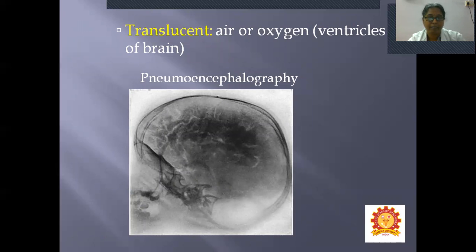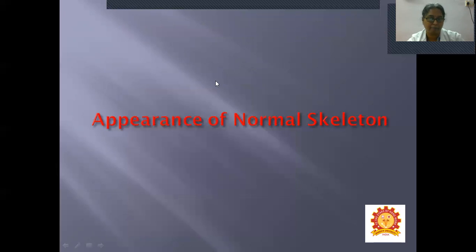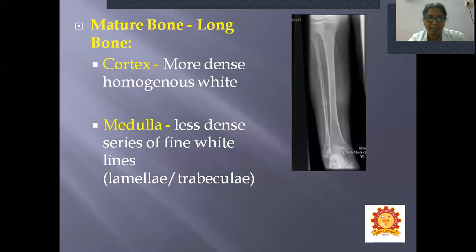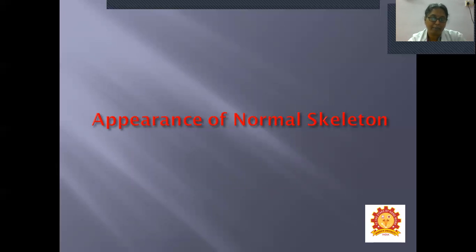Another type of contrast material is translucent — air or oxygen was used in the earlier days before CT. To study the ventricles of the brain, surgeons would inject air or oxygen, a procedure called pneumocephalography. In summary: two types of X-rays — plain and contrast; contrast material has two types — translucent (air/oxygen) and opaque (barium sulphate for GI, iodine compounds for other hollow structures).